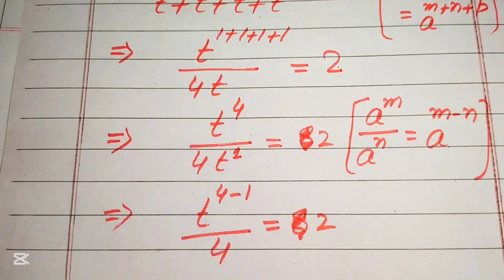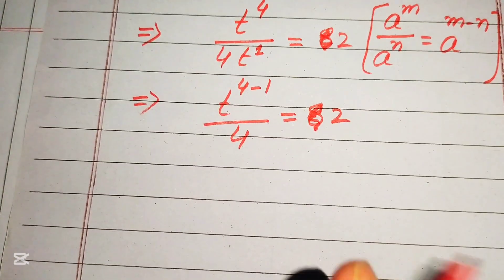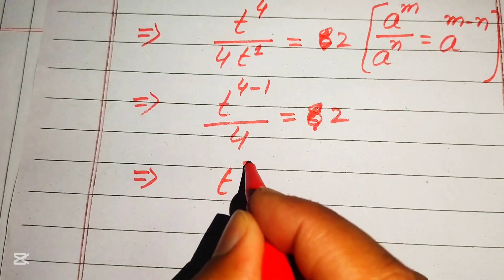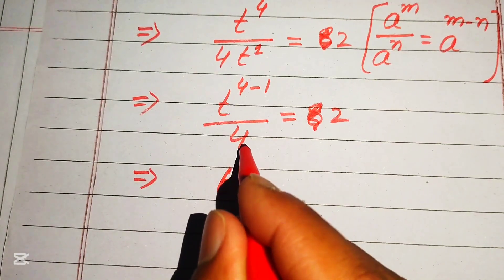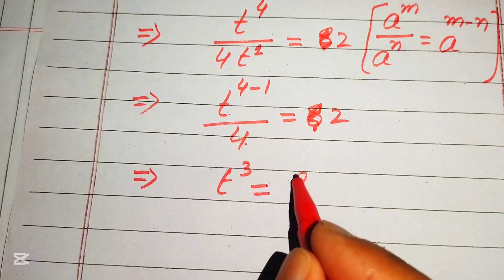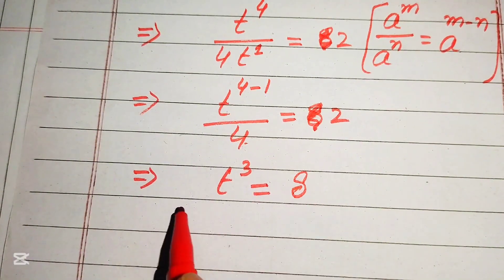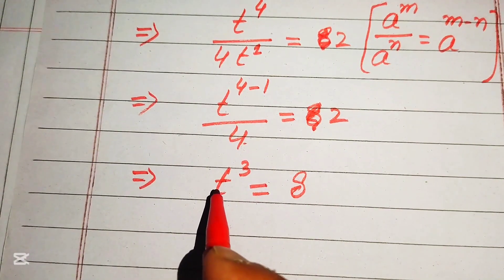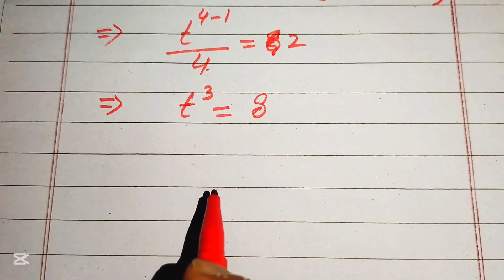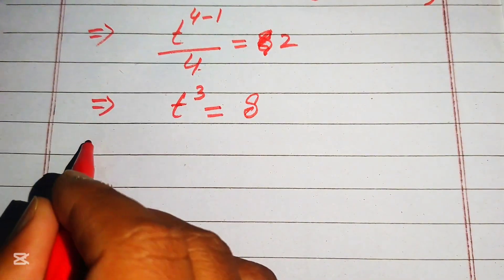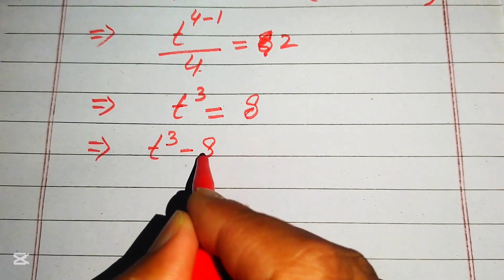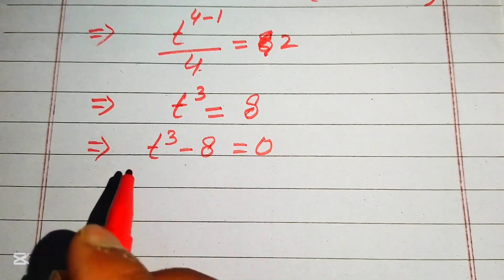In the next step, this is written as t cubed equals — when we move the 4 to the right-hand side — 4 times 2, which is 8. So the simplified form of the equation is t cubed equals 8. We then move 8 to the left-hand side: t cubed minus 8 equals 0.